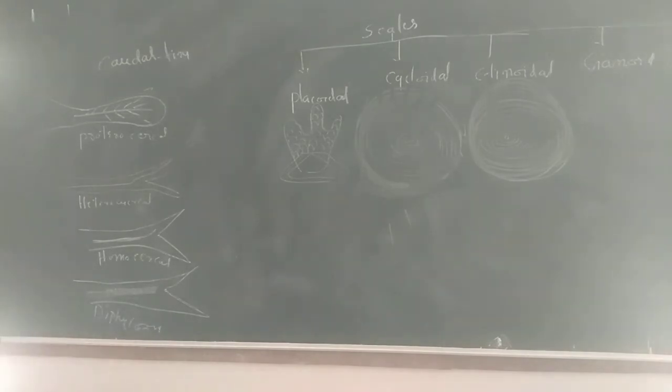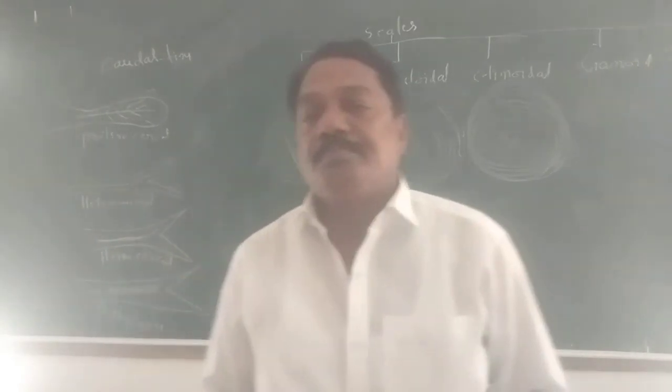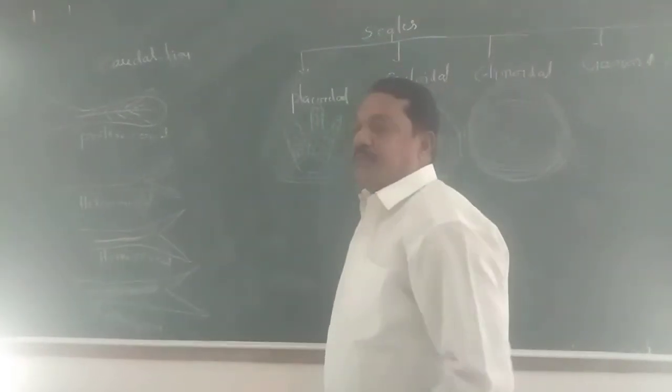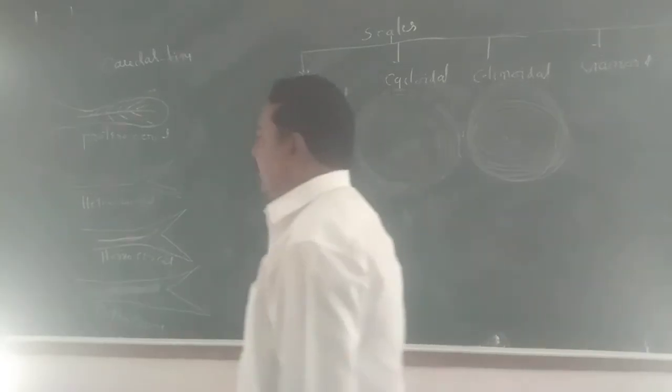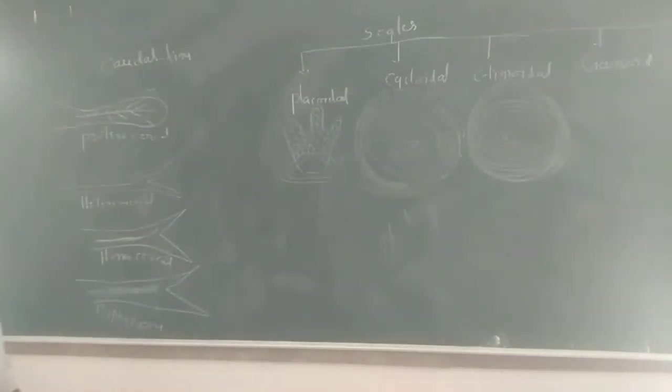In these protocercal caudal fins, the vertebral column extends up to the tip of the animal body. Around the vertebral column, fin rays are arranged. It means there is no special kind of lobe. The vertebral column extends up to the tip of the animal body. These kind of caudal fins are called protocercal caudal fin. These are primitive or primary fins.